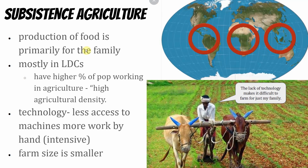Subsistence agriculture is found mostly in LDCs — less developed countries — generally located along the tropics, in these middle latitudes. Because of a lack of technology, a higher percentage of the population has to work in agriculture. There are fewer machines, so people have to do more work by hand and with animals. The farms are generally smaller, and the lack of technology makes it difficult to farm for more people.